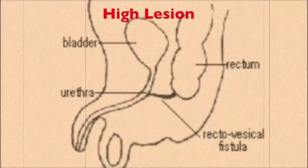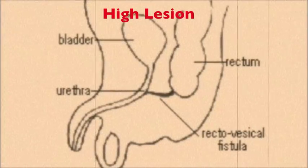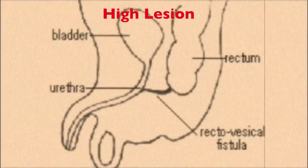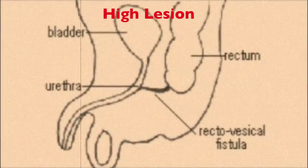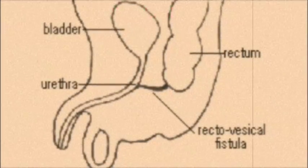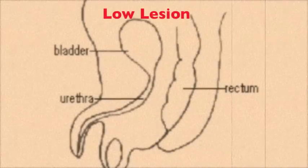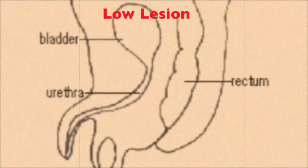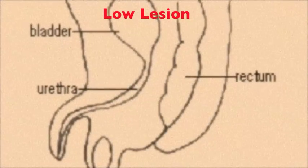In a high imperforate anus lesion, the large bowel ends in a blind pouch with possible communication through a fistula with the vagina, base of penis, scrotum, or urethra. In a low imperforate anus, only the anus is underdeveloped and the opening is too tight.